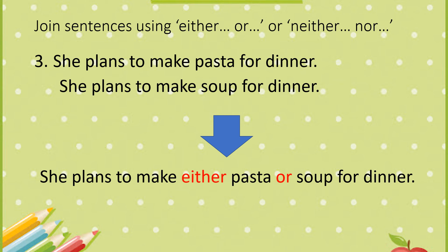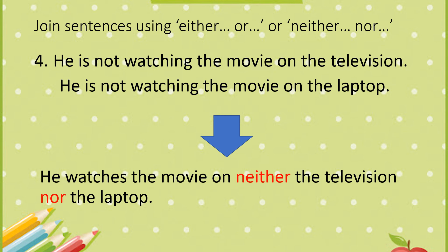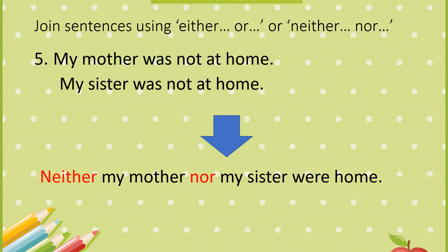Number three: 'She plans to make pasta for dinner' and 'She plans to make soup for dinner' — combined: 'She plans to make either pasta or soup for dinner.' Number four: 'He is not watching the movie on the television' and 'He is not watching the movie on the laptop' — combined: 'He watches the movie on neither the television nor the laptop.'